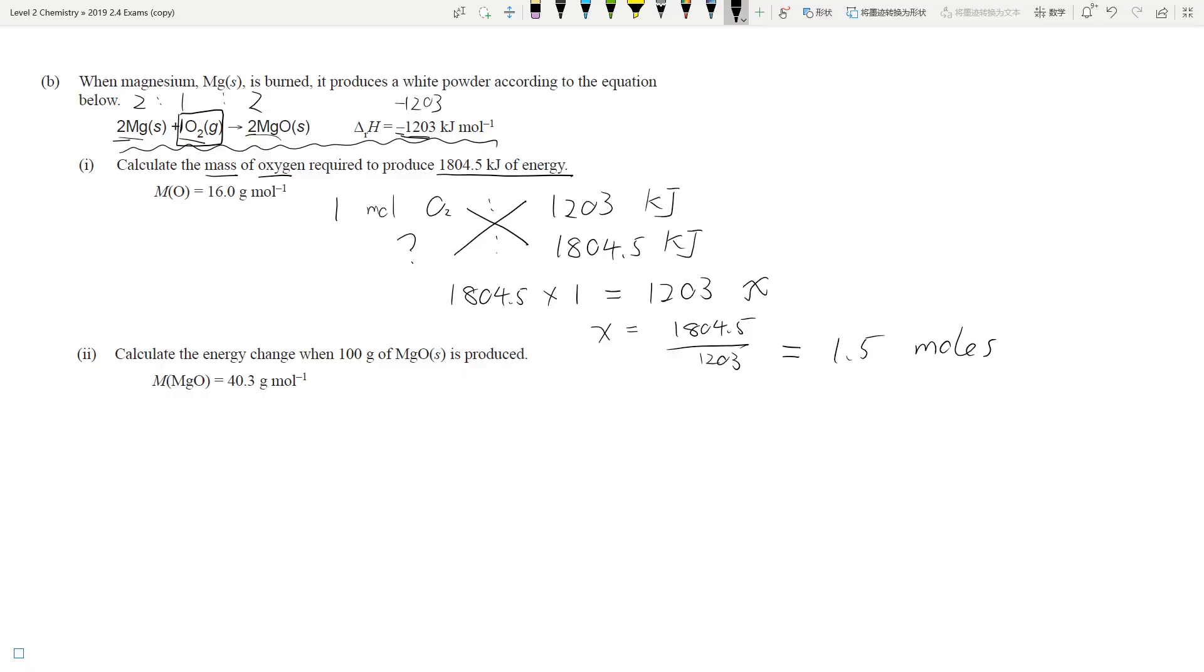If you have this ratio, if you're quite savvy with math, you should be able to solve this quite easily. If you're not so good with mathematics, this is what I tend to do, cross multiply. So that means 1804.5 multiplied by 1 equals 1203 multiplied by x. So x will be 1804.5 divided by 1203, and then you should get a number of 1.5 moles. That's not the final answer though, because we figured out the mole. Mass equals n times the big M. So that's going to be 1.5 times 16, which gives you 48.0 grams of O2.